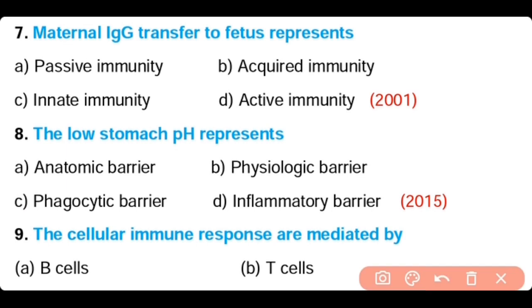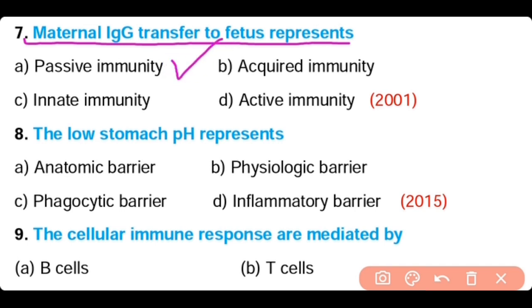Question number 7. The maternal IgG immunoglobulin transfer to the fetus represents: passive immunity, acquired immunity, innate immunity, or active immunity. The correct answer is Option A. The transfer of maternal IgG to the fetus is an example of passive immunity.